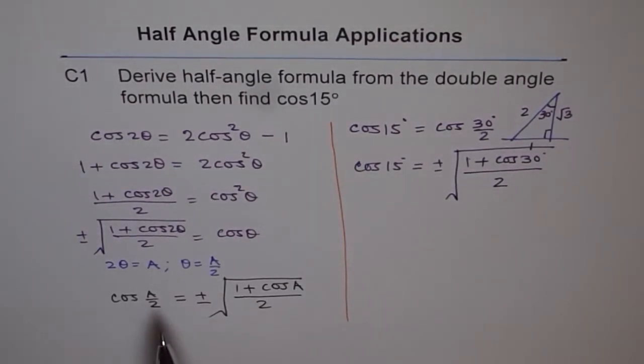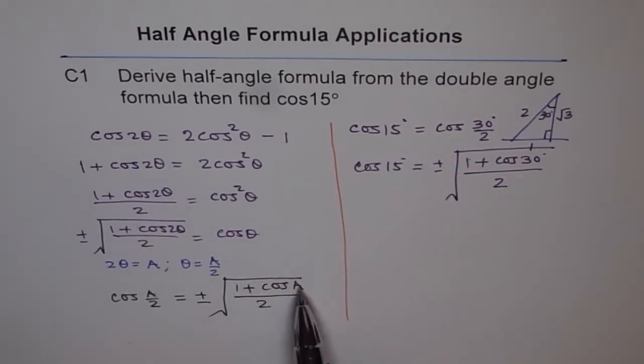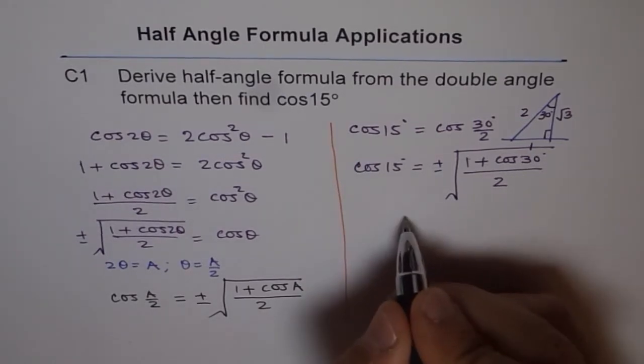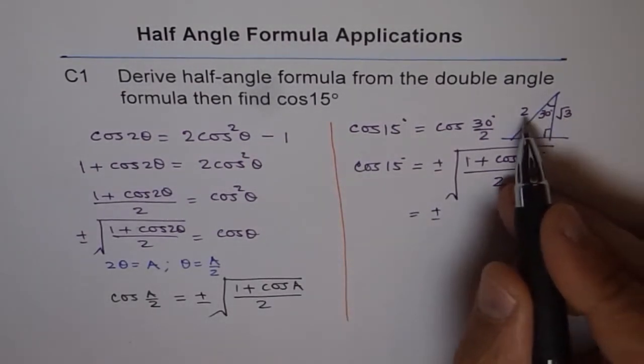So we use a/2 = 15, where a = 30. So we can use this half angle formula to calculate the value of cos 15 degrees. Now, what is cos 30°? Cos 30° is √3/2.